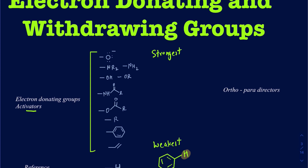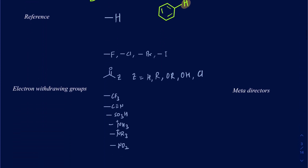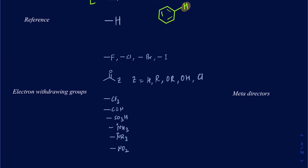I want to talk about electron withdrawing groups. On the list on the bottom, I have electron withdrawing groups, starting with weak electron withdrawing groups on the top, and then your strongest electron withdrawing groups, such as NR3+, NH3+, or NO2 groups. What electron withdrawing groups do to the ring is pull out electrons from the ring, making the ring electron deficient. If the ring is electron deficient, it's not going to act as a good nucleophile, so these groups are called deactivators.